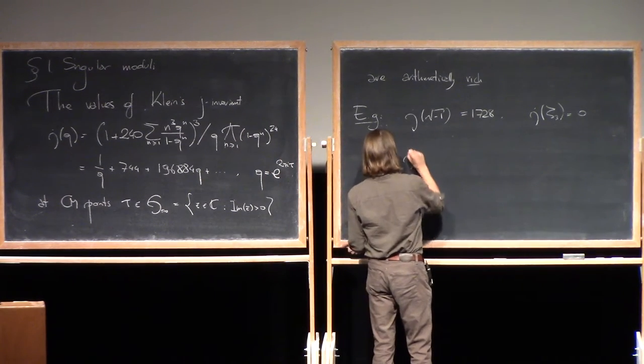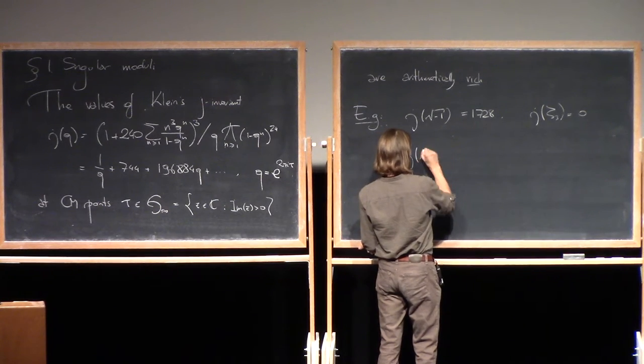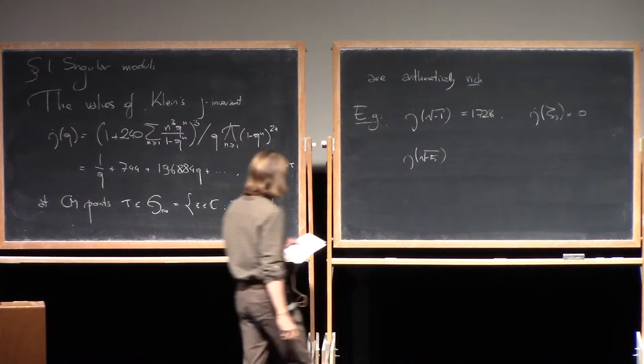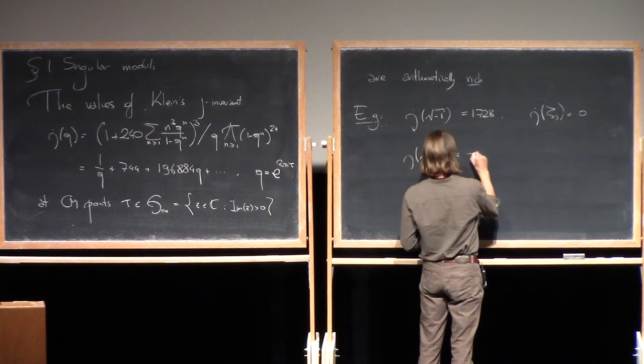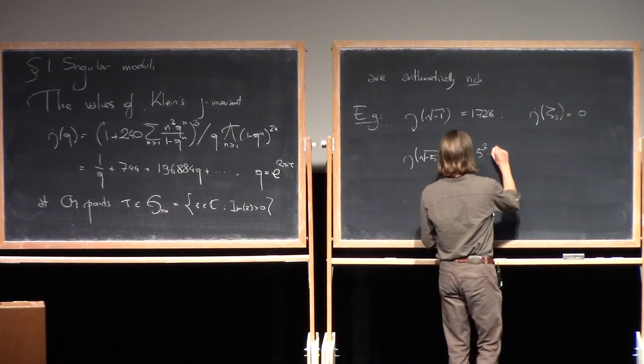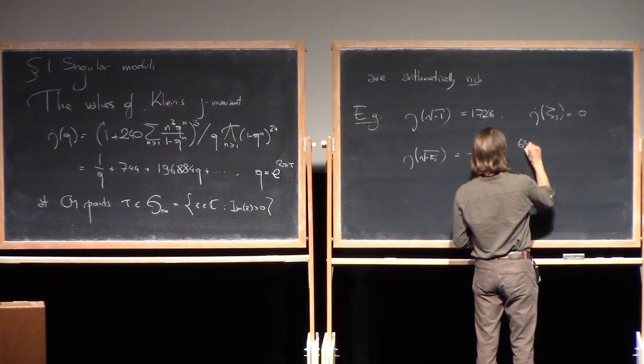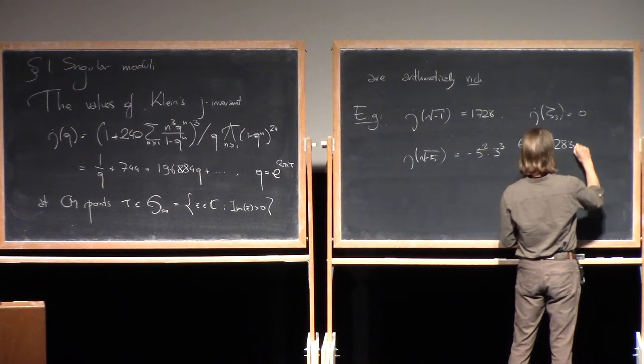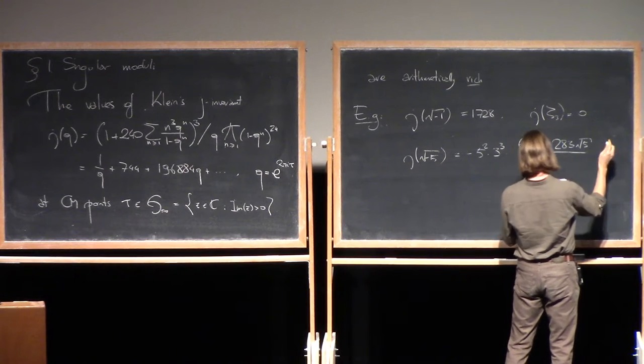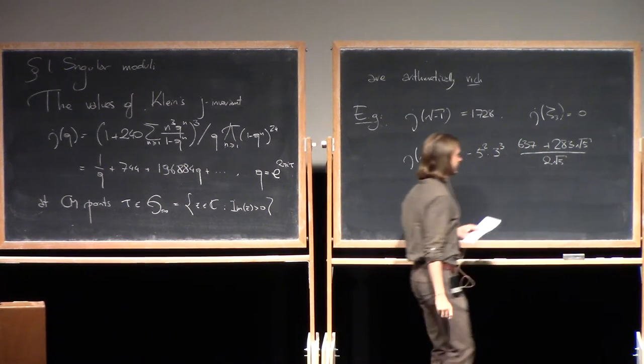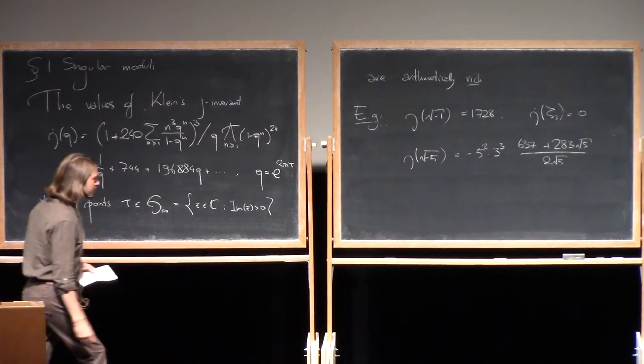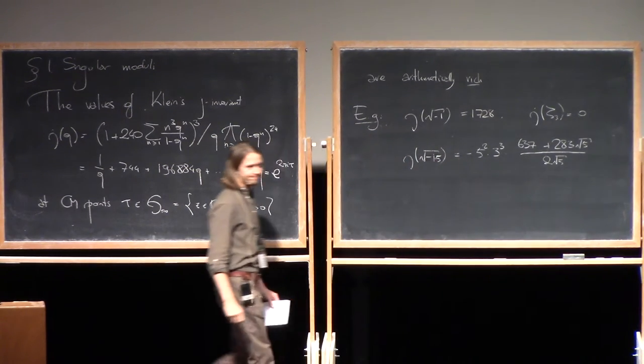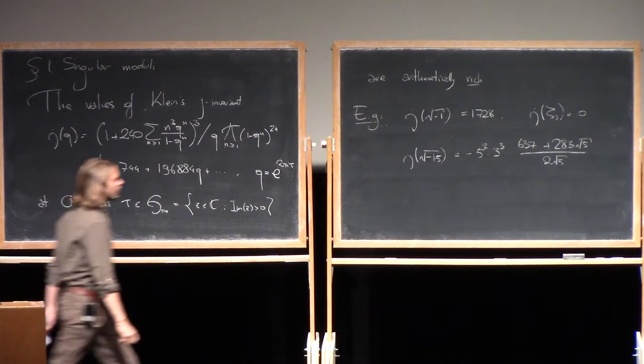Perhaps a slightly more interesting, randomly chosen example, is the j function evaluated at the square root of minus 15. Now I have to look at my notes, which I computed for you, minus 5 squared, times 3 cubed, times this magnificent number, 637, plus 283 square root of 5, divided out by twice the square root of 5. Minus 15, exactly.